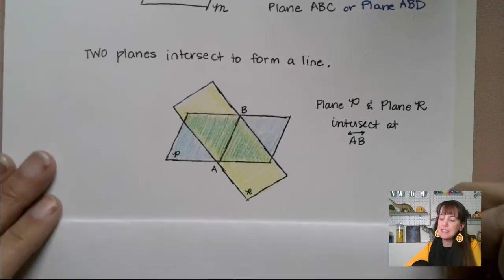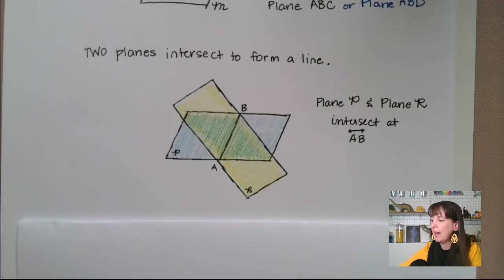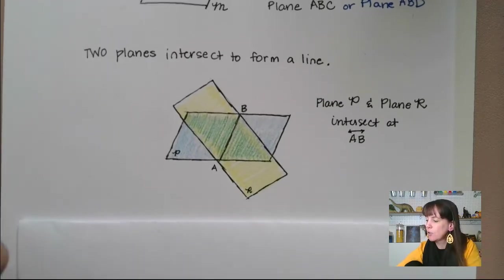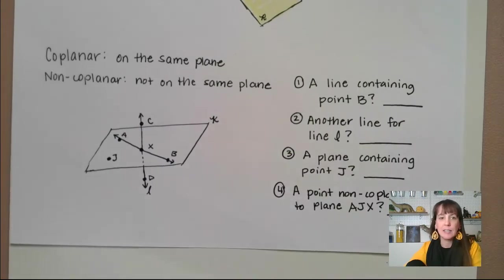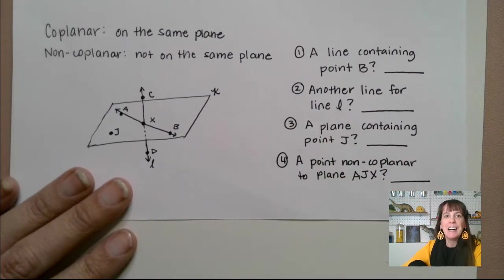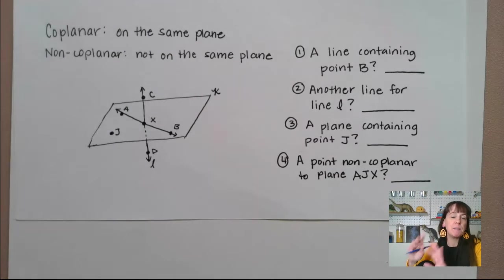So let's talk a little bit more about how these look. So, all right, we're going to get you so you can see it now. All right, so coplanar means that they're on the same plane. Non-coplanar means that they are not on the same plane.